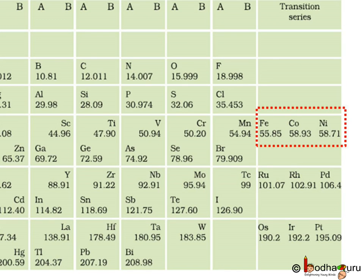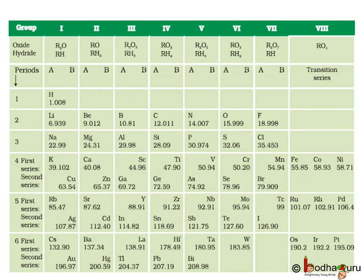Mendeleev focused on the basic properties. Hence, in some occasions, he had placed an element with a slightly greater atomic mass before an element with a slightly lower atomic mass. It was done to group elements with similar properties together. For example, cobalt with atomic mass equal to 58.9 appeared before nickel having atomic mass equal to 58.7.